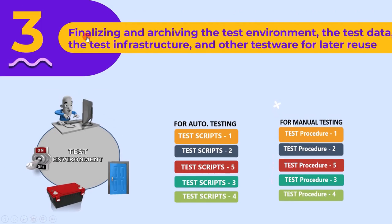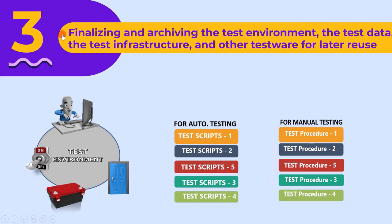The third activity is finalizing and archiving the test environment, the test data, the test infrastructure, and other testware for later reuse. To test a feature we need a test environment, which includes test setup, tools, software, test procedures, test scripts, and so on. After test execution, all these testwares are frozen and stored in a configuration management tool, so that we can reuse them based on the customer's request.